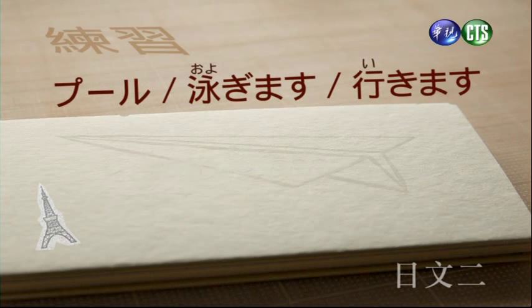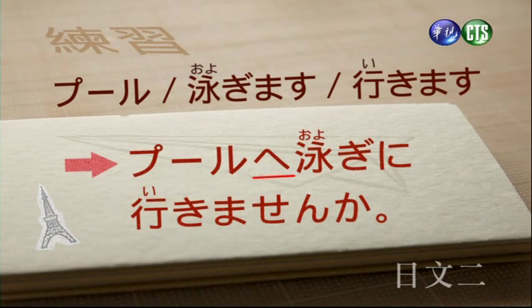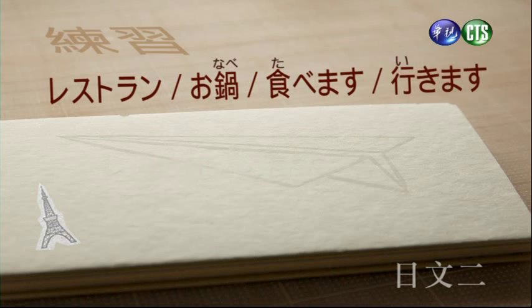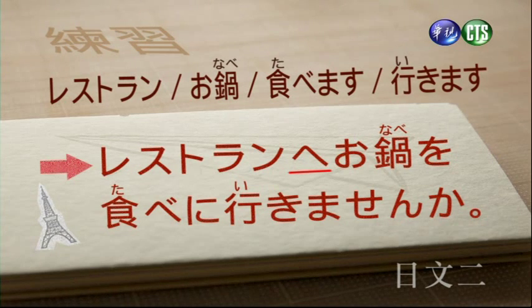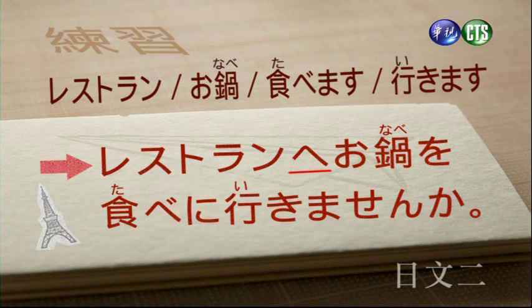プール、泳ぎます、行きます，換成ませんか用法，會變成：プールへ泳ぎに行きませんか（要不要去游泳池游泳）。プールへ後面泳ぎに，這個に一樣表示動作目的。レストラン、お鍋、食べます、行きます，會變成：レストランへお鍋を食べに行きませんか（要不要去餐廳吃火鍋）。へ表示去的方向，食べにこのに表示動作的目的，いきませんか表示邀約。